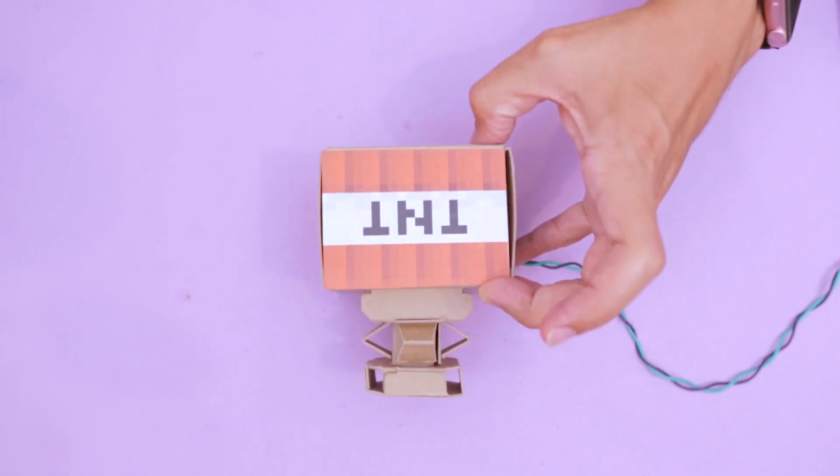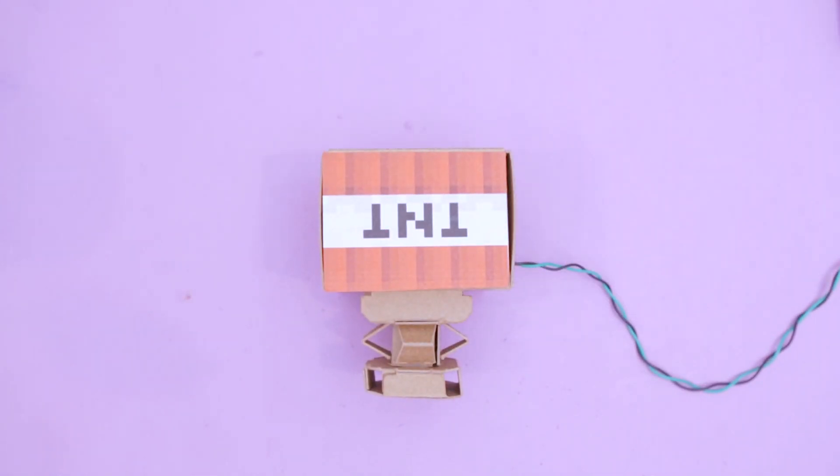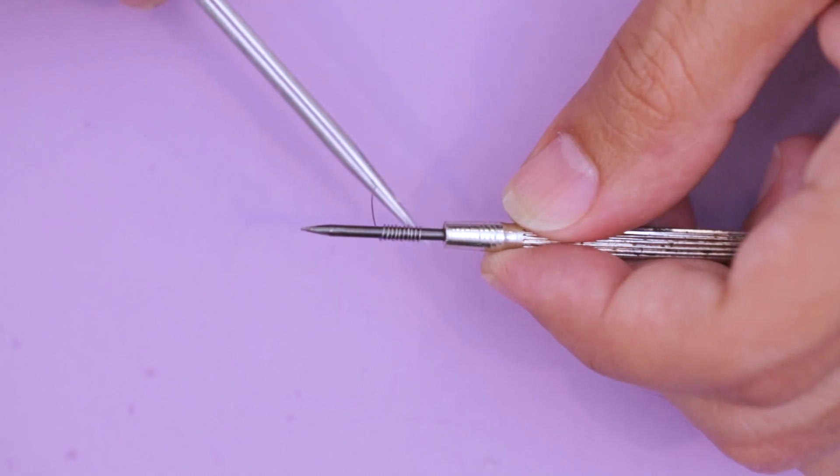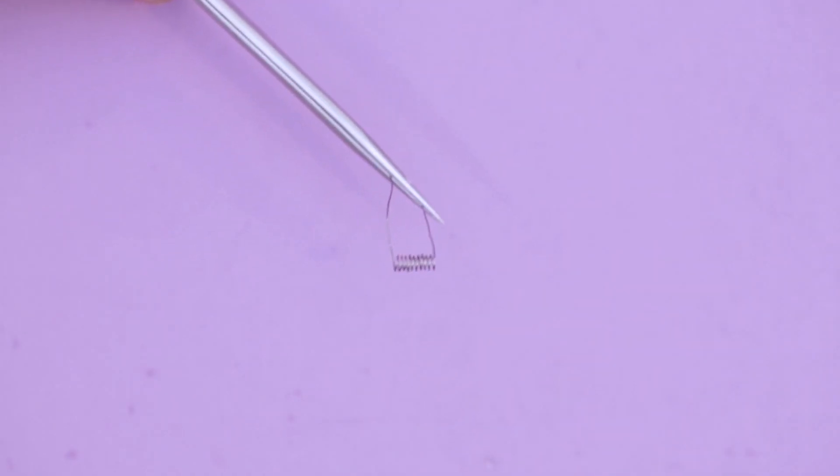You can get a spool of kanthal wire from your local store or online retailer. We built our own coil by wrapping it tightly around a cylindrical object like this screwdriver. We found the tighter the winding the faster it'll heat up.